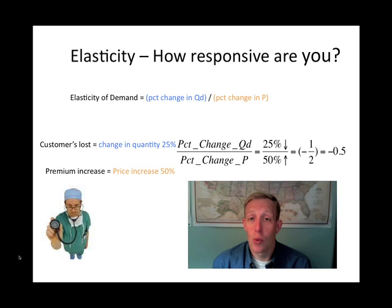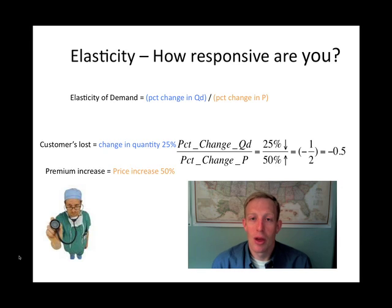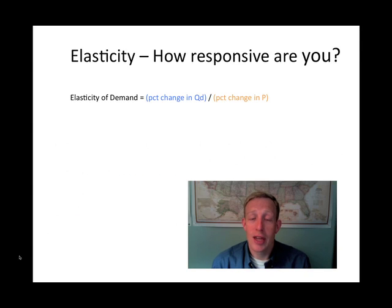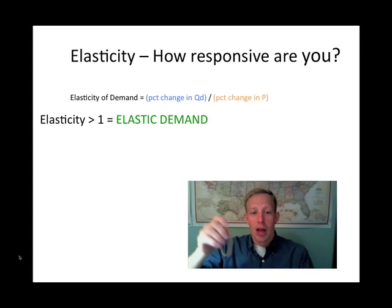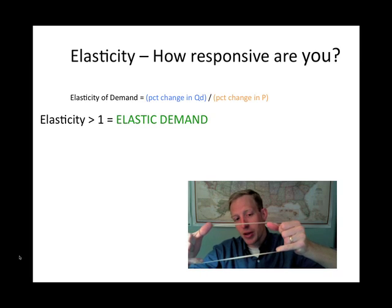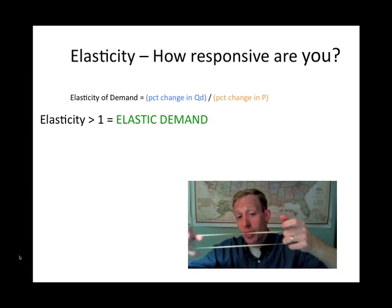The question becomes: what's the difference between the vacation and health care? That's where we identify how responsive people are. We use the number one as our guideline — it's the line of demarcation. If the elasticity of demand is greater than one, we say that demand is elastic, meaning there's a very strong response to a change in price. It's sort of like this rubber band — if you pull hard and get the rubber band to expand very far, we say things are very elastic.